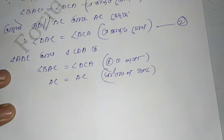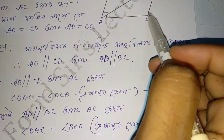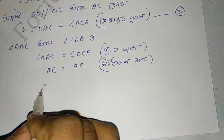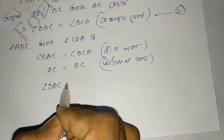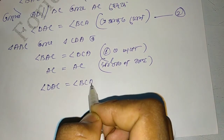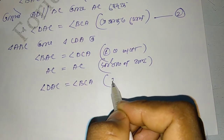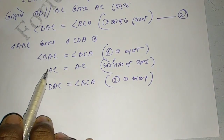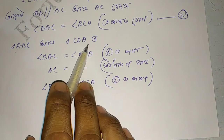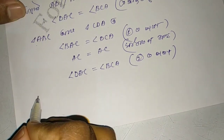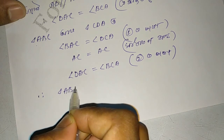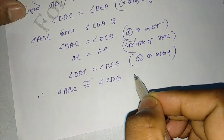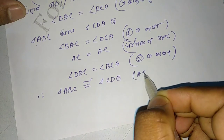This is the angle DAC equal to angle BCA. This is the angle-side-angle. Therefore triangle ABC and triangle CDA — angle-side-angle.